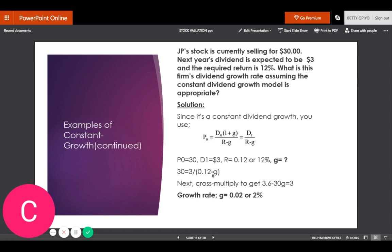After cross multiplying, it will be 3.6 - 30g = 3. Therefore, the growth rate g that you're looking for equals 0.02 or 2%. So I hope that's clear for this question.